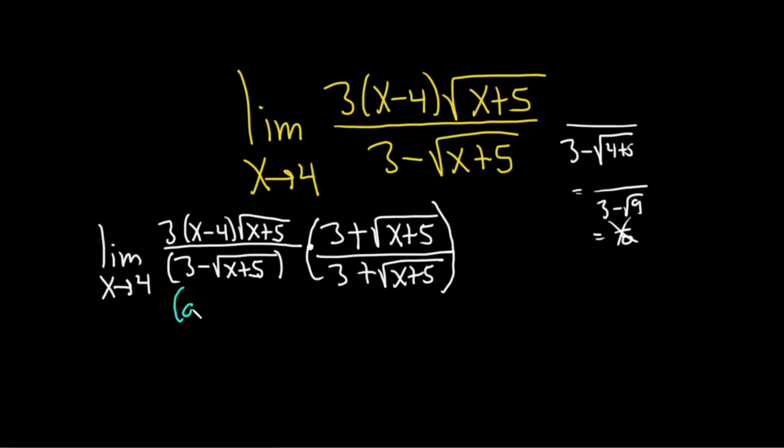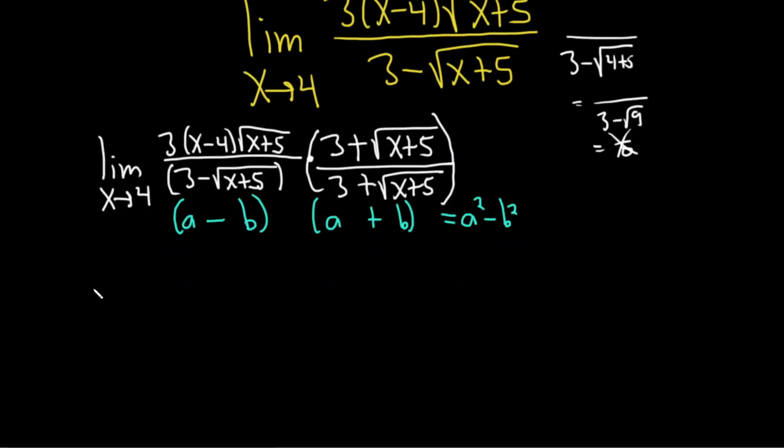Recall if you have a minus b times a plus b, that's equal to a squared minus b squared. So in this case, we can apply this formula. So let's do that. So this is equal to, or same as, limit x approaches 4.